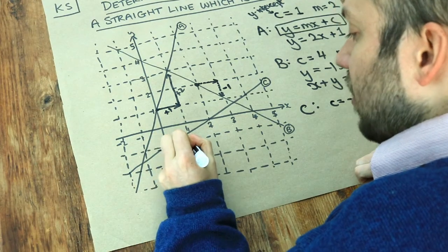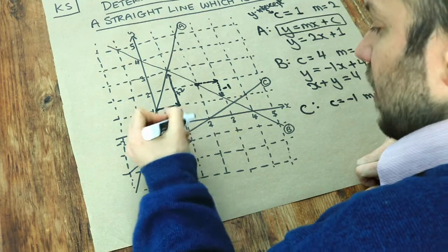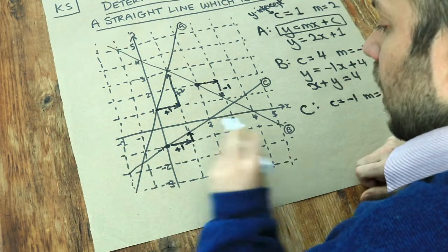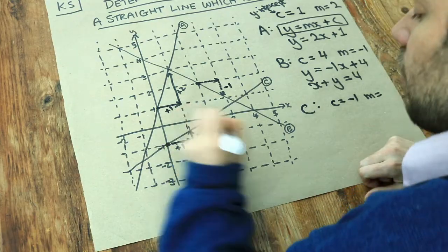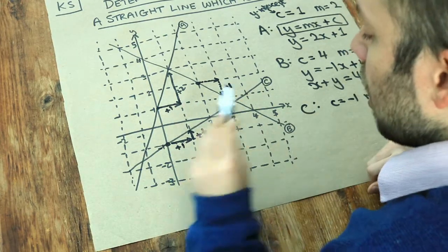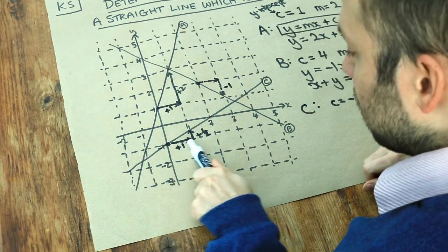Each time x increases by 1, we can see the y value is actually going up by half a square. Now how do we know it's half and not a third or something? Well that's because each time we go across 2, we go up 1.